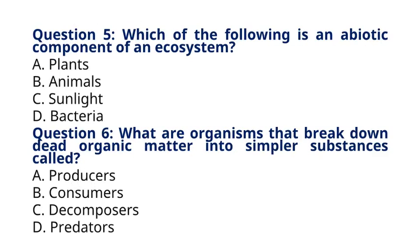Question 5. Which of the following is an abiotic component of an ecosystem? A. Plants. B. Animals. C. Sunlight. D. Bacteria. The correct answer to question 5 is option C, Sunlight. Explanation: Abiotic components are non-living factors in an ecosystem, such as sunlight, soil, water, temperature, and minerals.